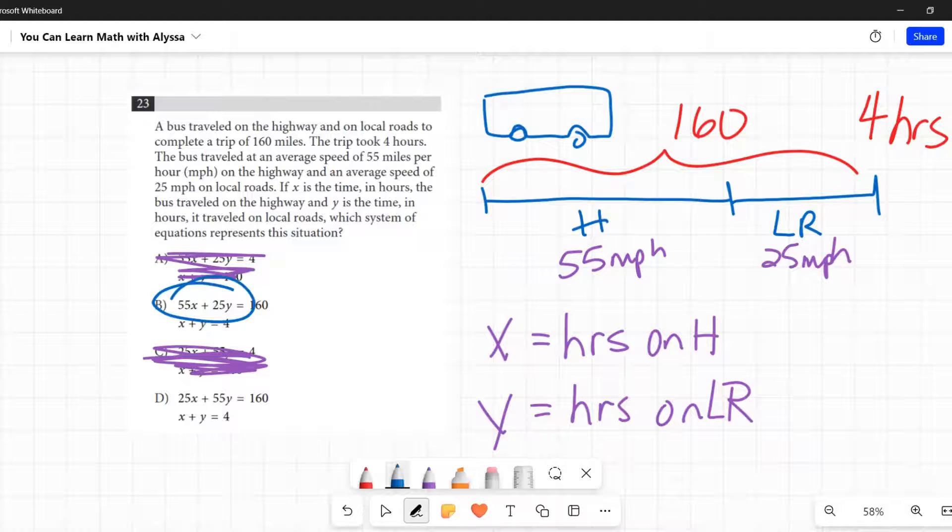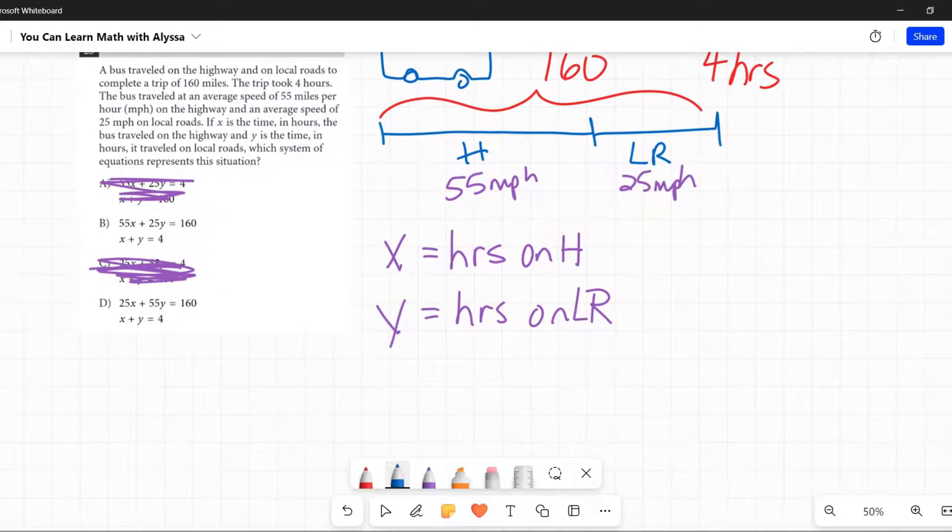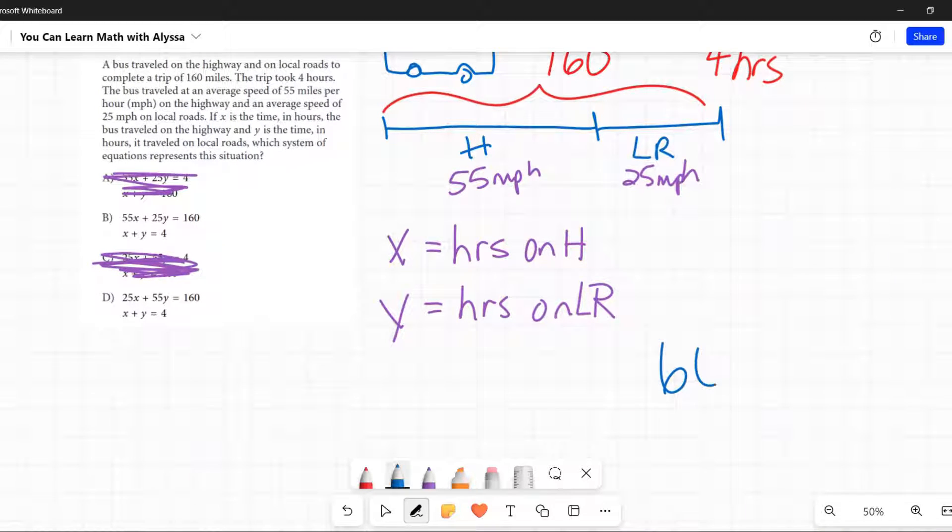Now what are our two differences? This one says 55 times x plus 25 times y equals 160. This one says 25 times x plus 55 times y equals 160. Let's think about this.